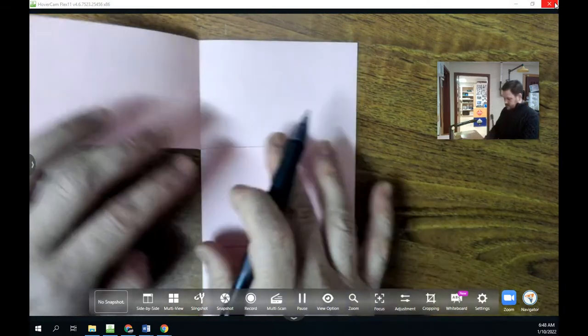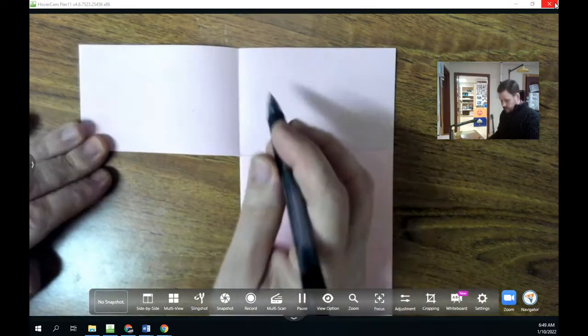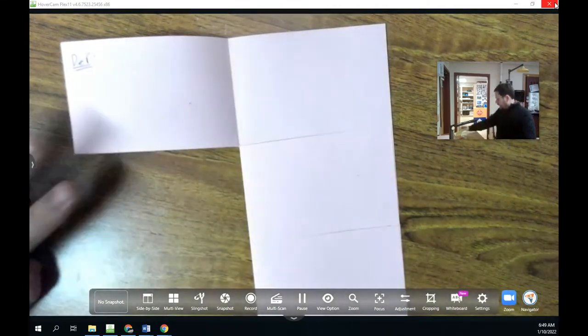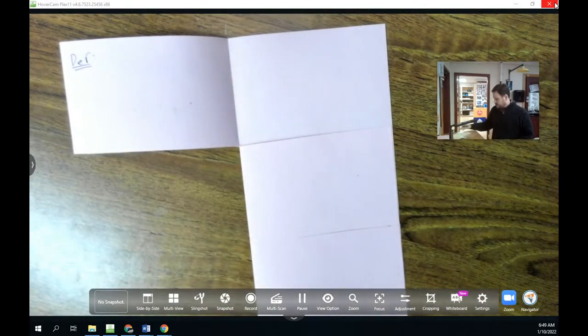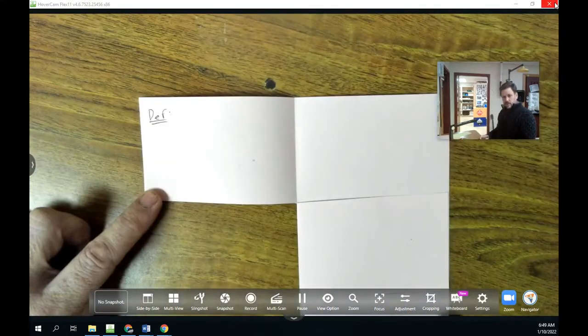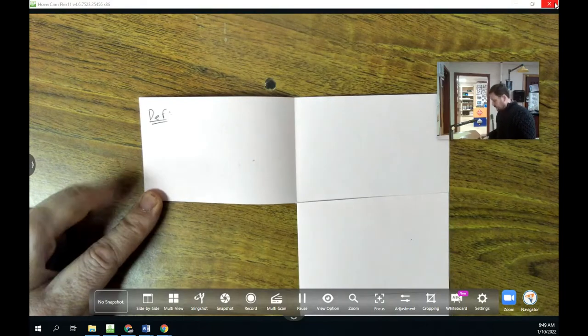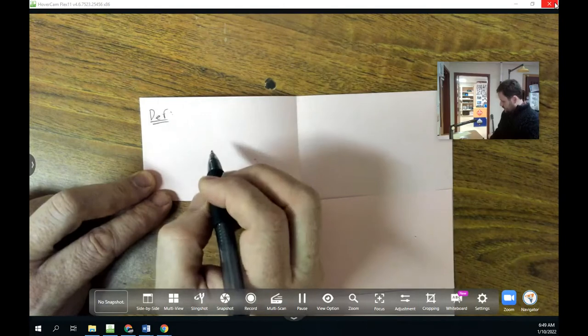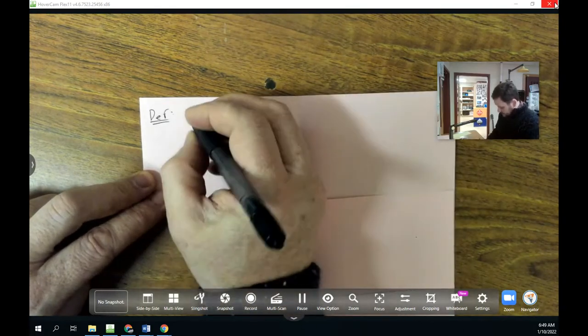So the definition of atomic radius is probably pretty intuitive. It's about how big an atom is, and the only problem is that it's a little bit difficult to measure atoms directly. And so the way atomic radius is defined, or one of the ways that atomic radius can be defined, is one half the distance between two atoms of the same element that are bonded together.